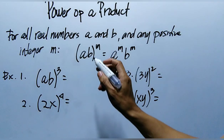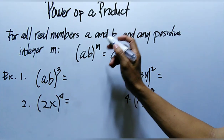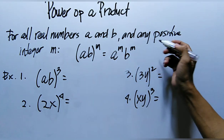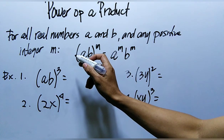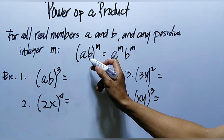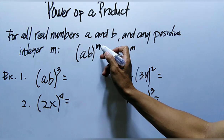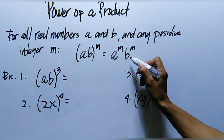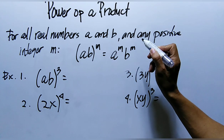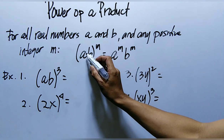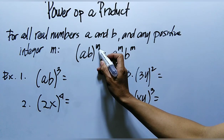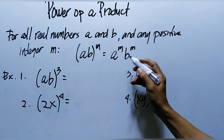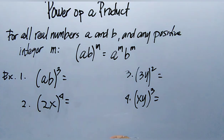Our topic is the Power of a Product rule. For all real numbers a and b, and any positive integer m, the quantity (a times b) raised to the power of m is equal to a raised to the power of m, times b raised to the power of m. So that is the result.